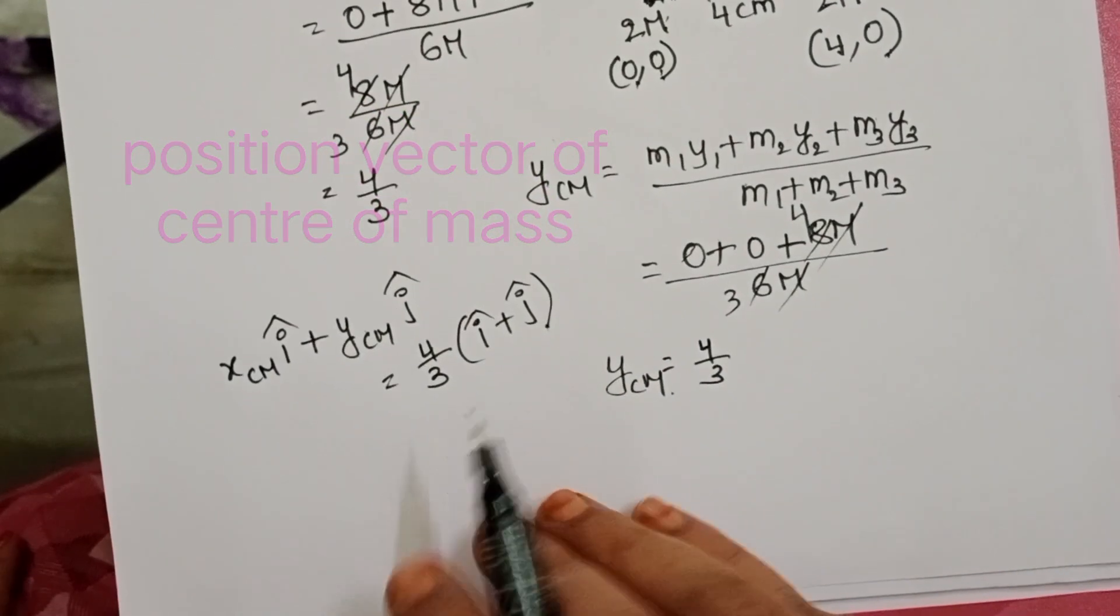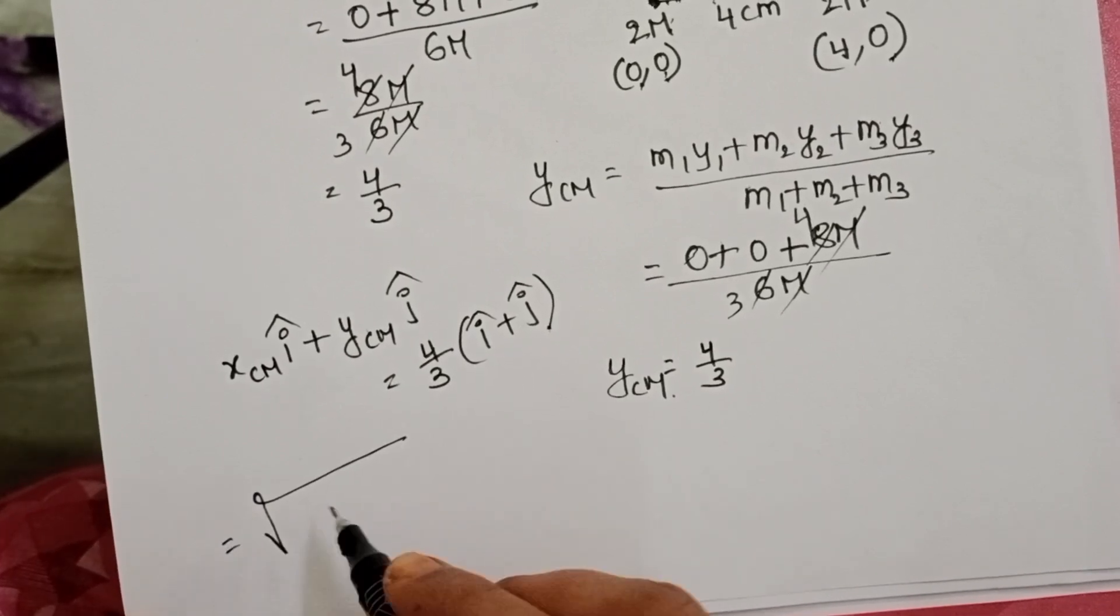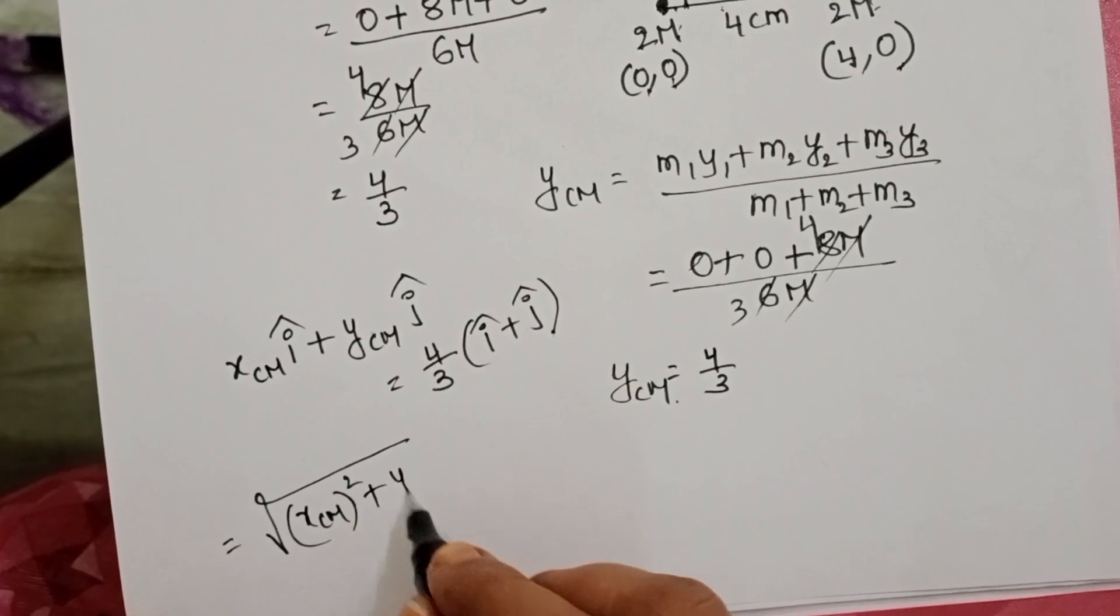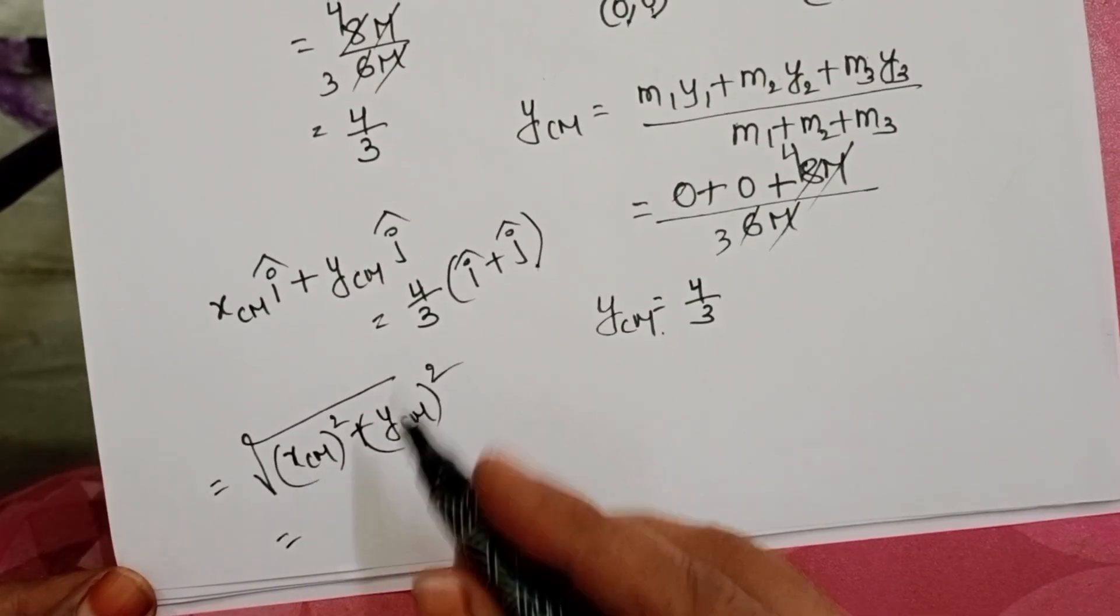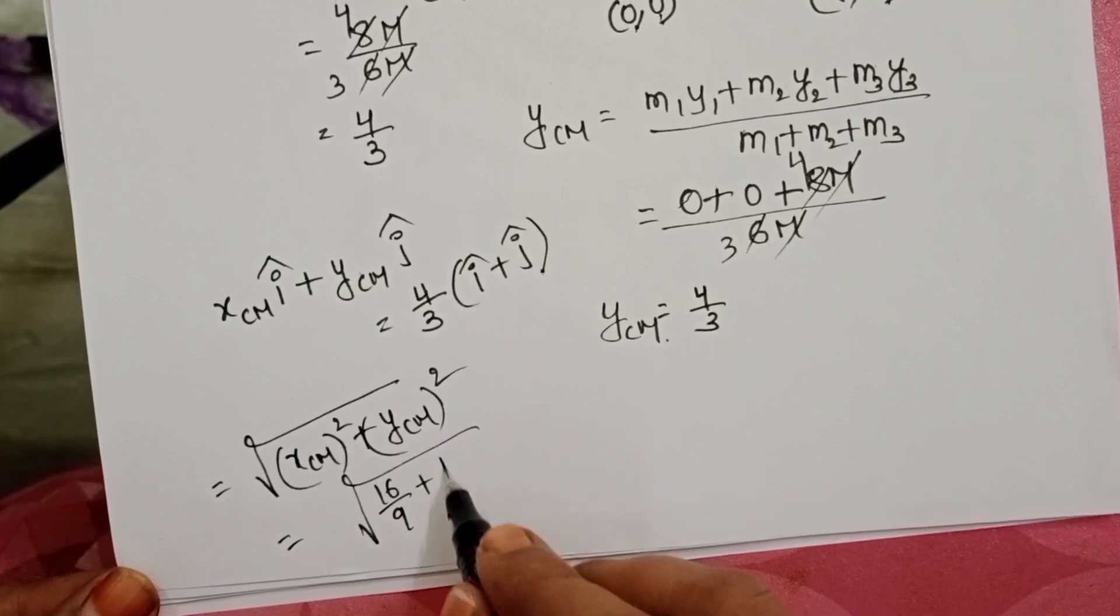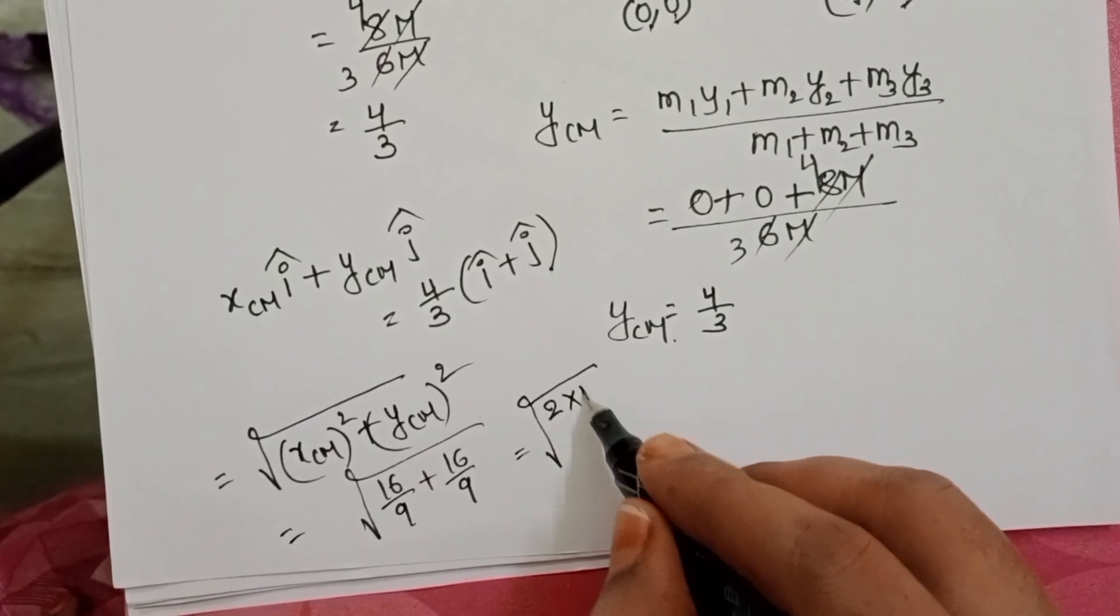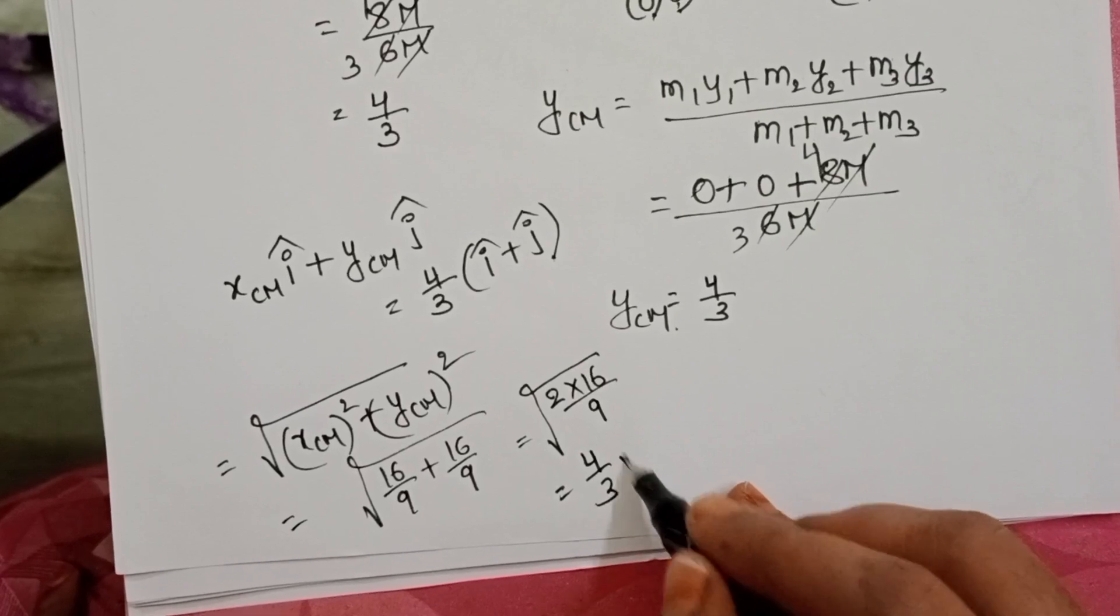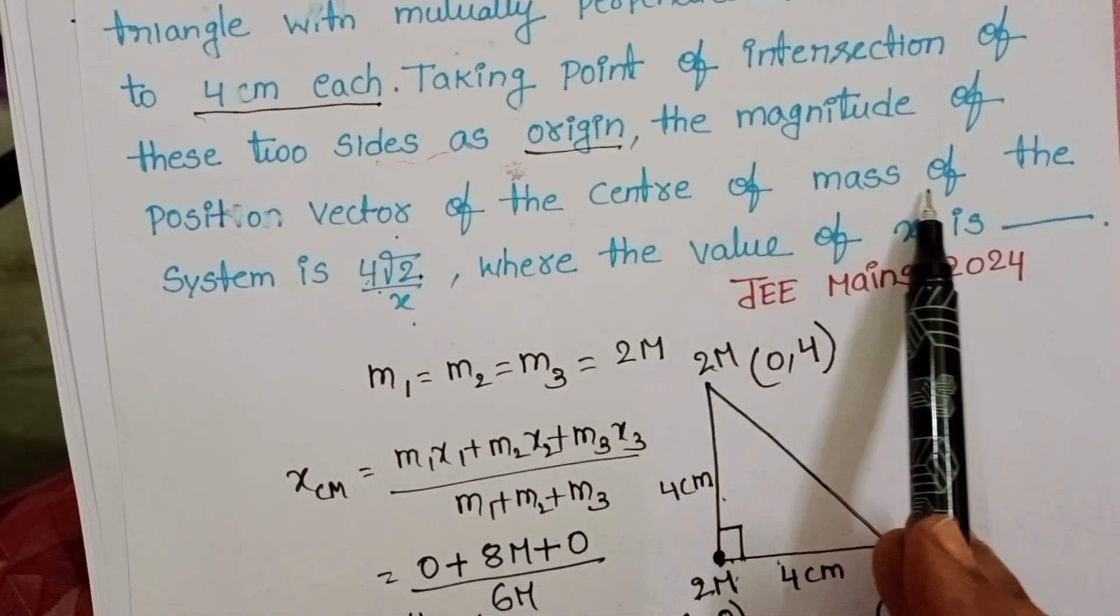Now, we want the magnitude of the position of center of mass. Square root of xcm whole square plus ycm whole square. 4 by 3 whole square becomes 16 by 9 plus 16 by 9. Square root of 2 into 16 by 9. Then it becomes 4 by 3 into square root of 2.